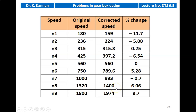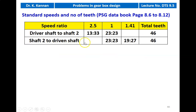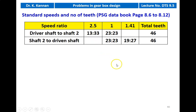We calculate the percentage of change in speed values. Then we select the number of teeth. From table 8.6 to 8.12, with respect to the standard transmission ratio, we take the gear tooth combination. We check that the sum of teeth between adjacent shafts is equal. For the first transmission with ratios 2.5 and 1, the total number of teeth equals 46. For the second stage transmission with ratio 1.41, the number of teeth also equals 46. We can choose any combination depending on whether we are increasing or decreasing the speed, allowing convenient manufacture and installation of the gears.